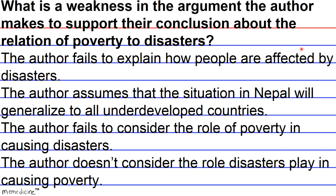Based on the wording of this question, it is a reasoning within the text question that's asking you to think about what claim the author is trying to support with a piece of evidence, and whether or not this argument is flawed. If you read back through the excerpt, you can see that the author does not consider the issues mentioned in answer choices A, C, and D. Answering this question requires noticing that although all prior sentences are concerned only with Nepal, in the final conclusion the author makes a general statement about the causal relation between poverty and disasters for underdeveloped countries. So, the author is assuming whatever is true of Nepal would generalize to other underdeveloped countries.